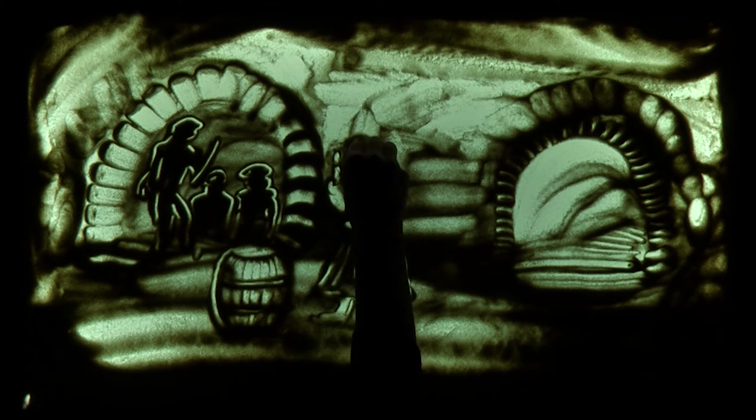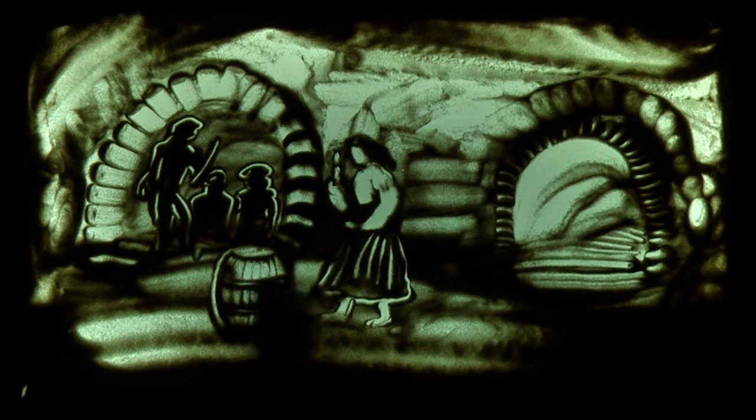Тоді ж Іван вхопив Оксану на руки, щоб якось врятувати. Але чуда не сталося.